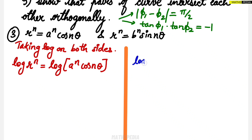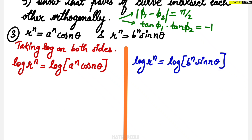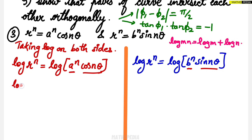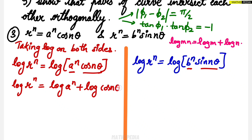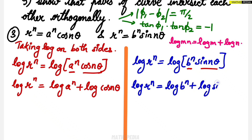For the second equation: log of r^n equals log of b^n sin(nθ). Now we simplify. Since a^n and cos(nθ) are in multiplication form, we apply the property log(m × n) = log m + log n. So: log r^n = log a^n + log cos(nθ), and log r^n = log b^n + log sin(nθ).